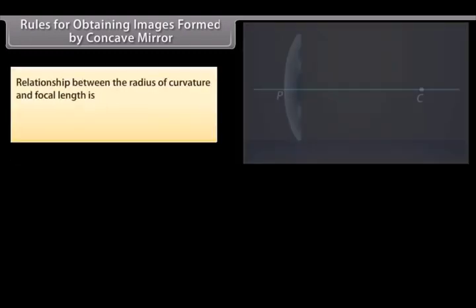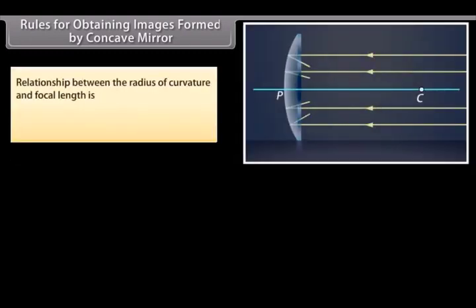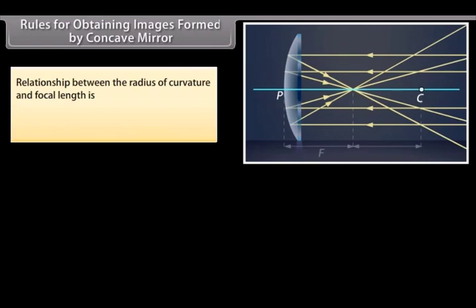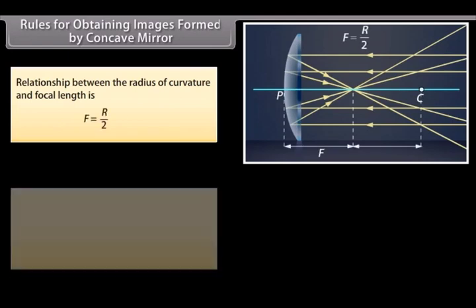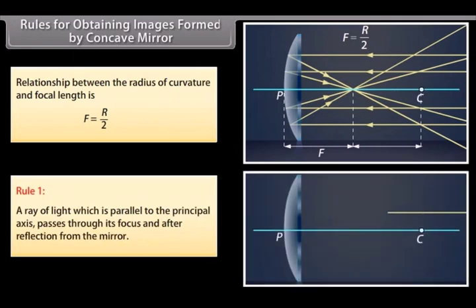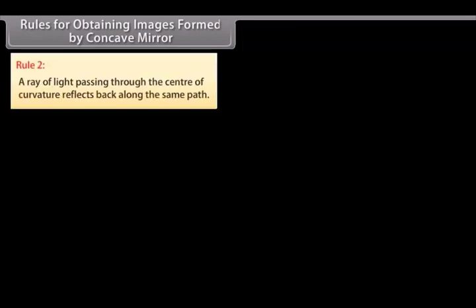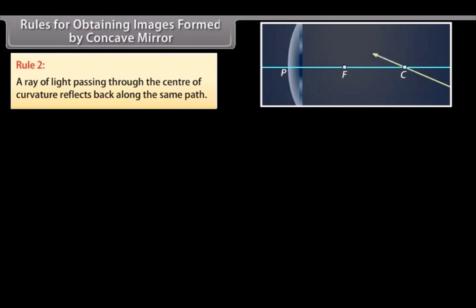Rules for obtaining images formed by concave mirrors. The relationship between the radius of curvature and focal length is: F equals R divided by 2. Rule 1: a ray of light which is parallel to the principal axis passes through its focus after reflection from the mirror. Rule 2: a ray of light passing through the center of curvature reflects back along the same path.